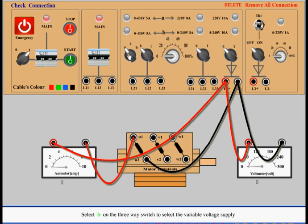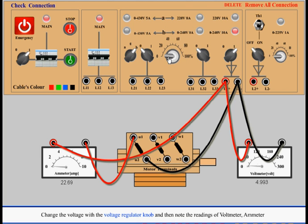Select B on the three-way switch to select the variable voltage supply. Select one on the DC two-way switch. Change the voltage with the voltage regulator knob and then note the readings of the voltmeter and ammeter.